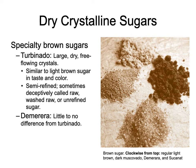Turbinado features large, dry, free-flowing crystals that are very light brown or blonde — just slightly unrefined. Demerara is not very different from turbinado. Interestingly, the word 'turbinado' actually comes from a brand name originally — it's similar to calling a tissue a 'Kleenex' or any bandage a 'Band-Aid.' The brand name became the commonly used name for that type of sugar.